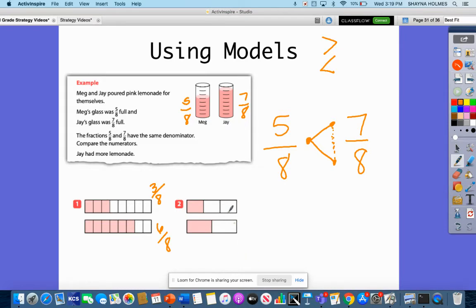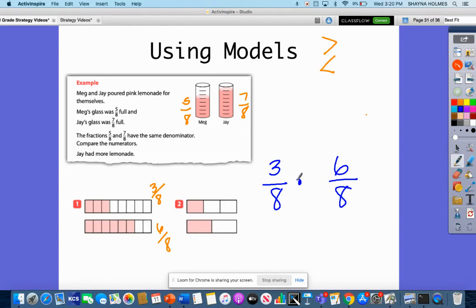Let me erase this up here. So we have 3/8, and then 6/8. Since 3/8 is smaller, I'm going to have my little dot, and it's going to go upward like this because 3/8 is less than 6/8.